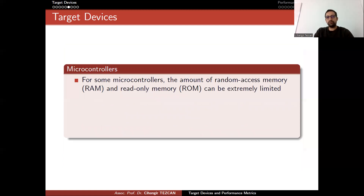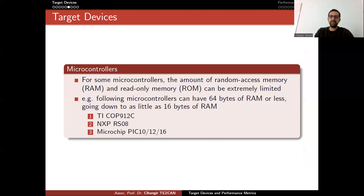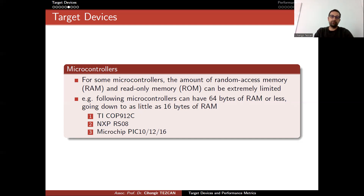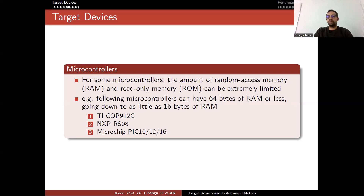For some microcontrollers, the amount of RAM and ROM can be extremely limited. For example, some microcontrollers can have 64 bytes of RAM or less, going down to as little as 16 bytes of RAM. Just imagine how you are going to perform operations with that amount of memory. If you go years back, the Commodore 64 had 64 kilobytes of memory, but we still in 2022 have very small devices with less memory than the Commodore 64.